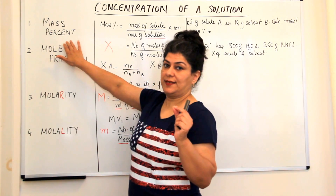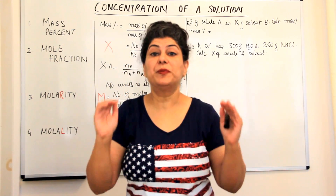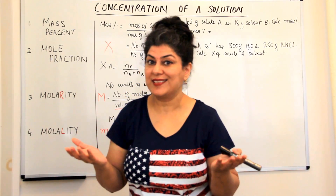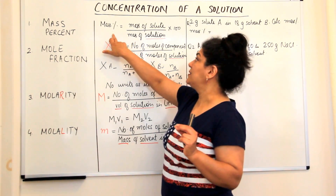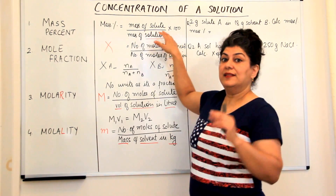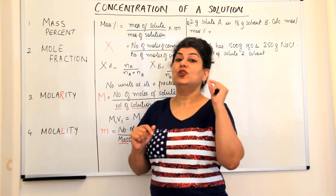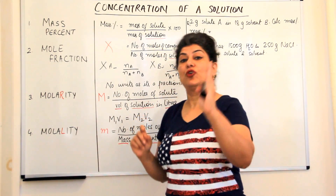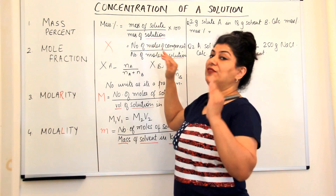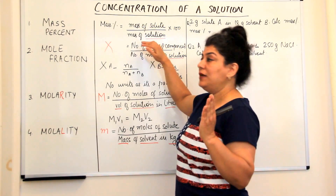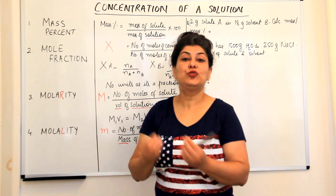The mass percent — as the name suggests — is the percentage of the mass of solute in the solution. The formula for it is: mass percent equals the mass of solute divided by the mass of the solution, multiplied by 100. I underline 'solution' because whenever we mention solution it means it consists of both the solute and the solvent. So it's mass of solute divided by mass of solute plus solvent, into 100.